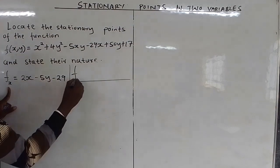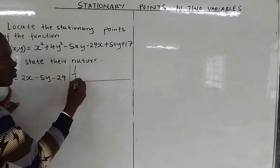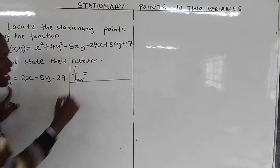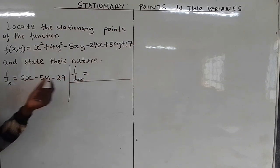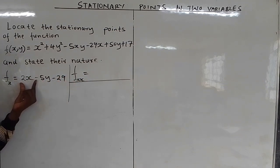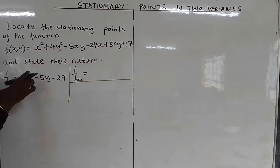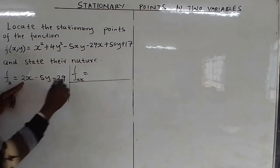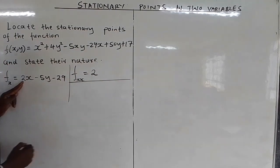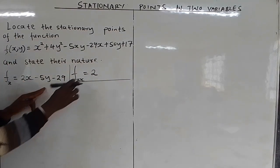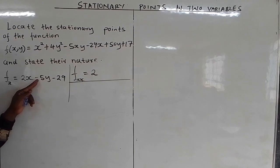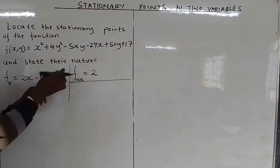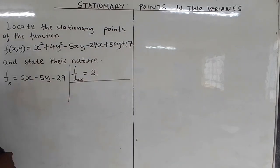Having done the first partial derivative with respect to x, we now differentiate again partially with respect to x for the second time. Differentiating 2x gives 2. The remaining terms have no x, so they are constants and differentiate to 0. So ∂²f/∂x² = 2.